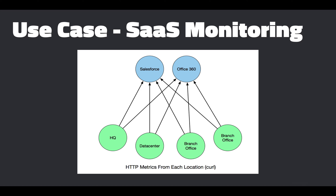Let's dive into some use cases. The first is ongoing monitoring for SaaS. You can keep your SaaS providers honest by monitoring them from multiple points around your infrastructure. In the diagram shown here, we're running HTTP tests from multiple locations around our organization. TODD can report metrics for things like page load times, transactions, and more — all from multiple perspectives. We're doing the same test from our headquarters, our data center, and two branch offices.